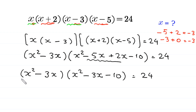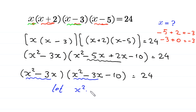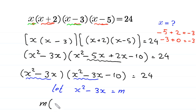Here we have x squared minus 3x in the first factor and x squared minus 3x in the second factor. So we let m equal x squared minus 3x and substitute m into this equation. The equation becomes m times (m minus 10) is equal to 24.